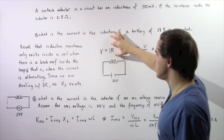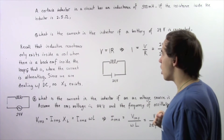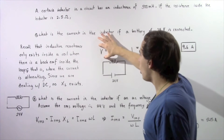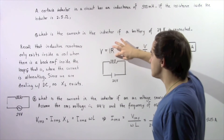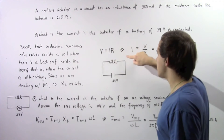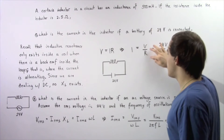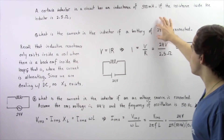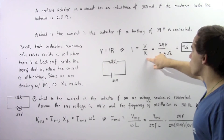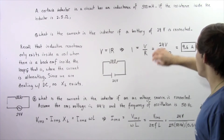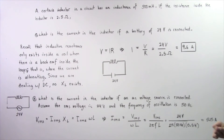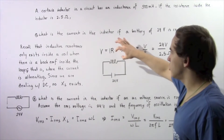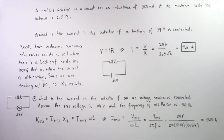That means to calculate the current, we simply treat this as a resistor and apply Ohm's law. The voltage across our inductor is equal to the current multiplied by the resistance. Solving for I, we get I = V / R. Since the voltage is 24 volts and the resistance is 2.5 ohms, 24 divided by 2.5 gives us 9.6 amps. So the electric current in part A inside the loops of our inductor is 9.6 A.